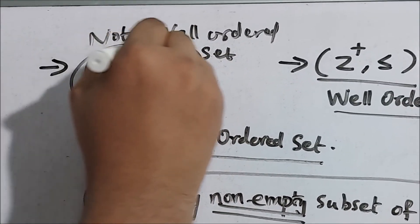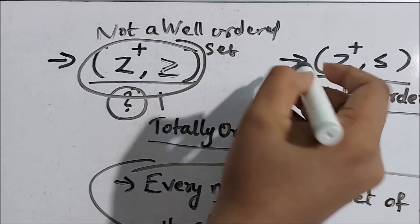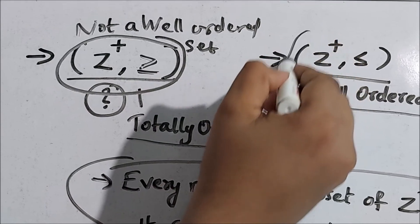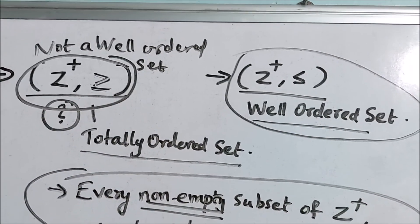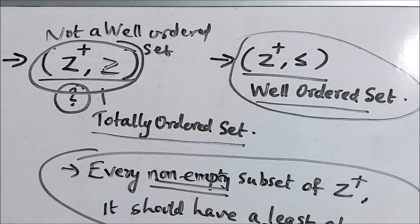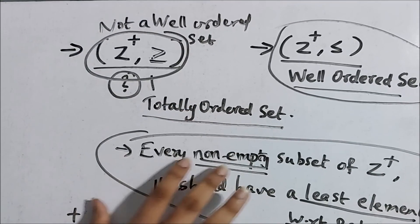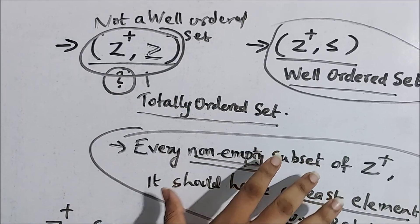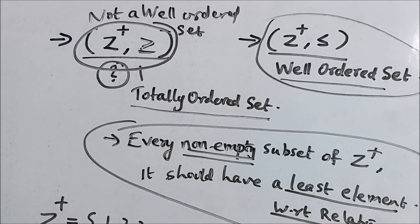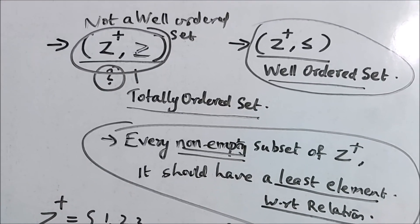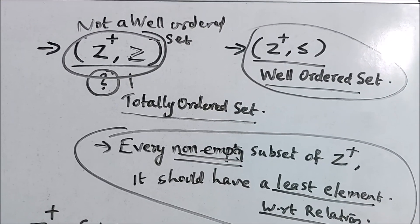So (ℤ⁺, ≥) is an example of a set which is not well-ordered, and (ℤ⁺, ≤) is an example of a set which is well-ordered. For a set to be well-ordered, it has to be a totally ordered set and every non-empty subset of that set should have a least element with respect to the relation. Thank you.